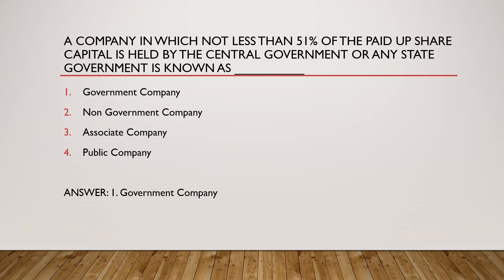Question: A company in which not less than 51 percent of the paid-up share capital is held by the Central Government or any State Government is known as — options: government company, non-government company, associate company, or public company. Note the difference: for a holding company it is 50 percent or more, but when the Central Government or a State Government holds 51 percent or more of shares in any company, that company becomes a government company. So the answer is option one — government company.